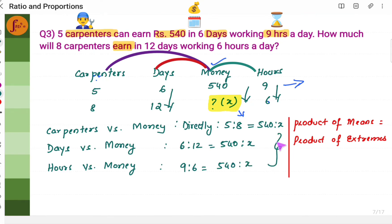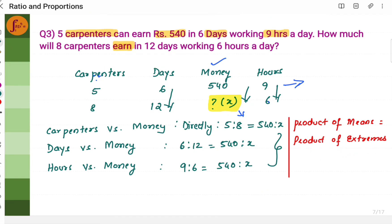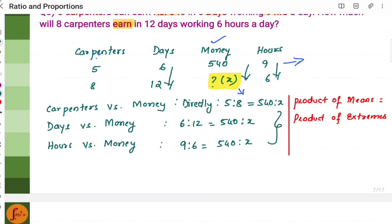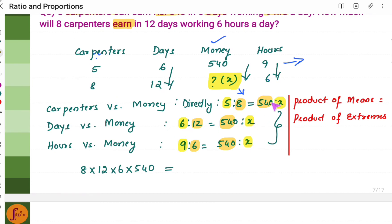So we have arrived at three proportions. Now we use product of means is equal to product of extremes. The means are all the second values: 8, 12, 6, and 540. The extremes — the corner/last terms — are: 5, 6, 9, and x. Product of means is 8 into 12 into 6 into 540, equal to product of extremes: 5 into 6 into 9 into x.